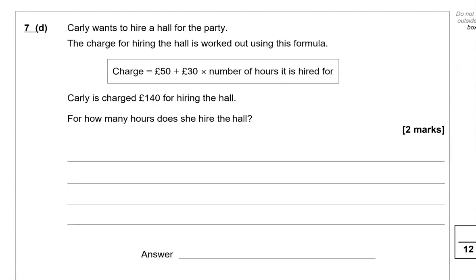Carly wants to hire a hall for the party. The charge for hiring the hall is worked out using this formula. Charge is equal to 50 pounds plus 30 pounds times the number of hours it is hired for. Carly is charged 140 pounds for hiring the hall. For how many hours does she hire the hall? So this is C for charge equals 50 plus 30 times number of hours. Let's just denote that with h. Now we know what the charge is equal to which is 140.